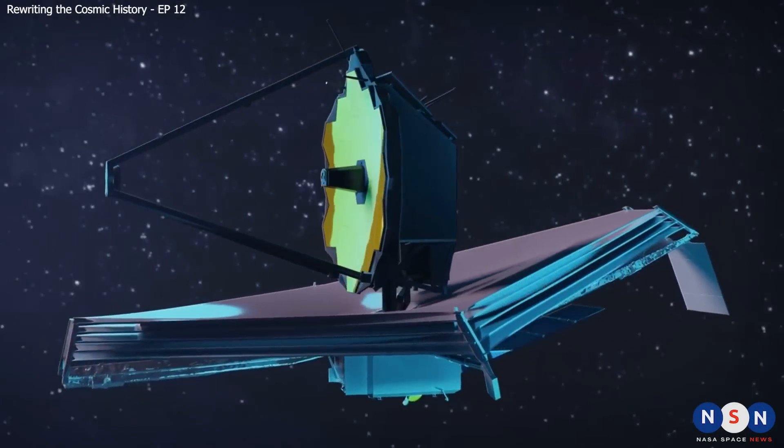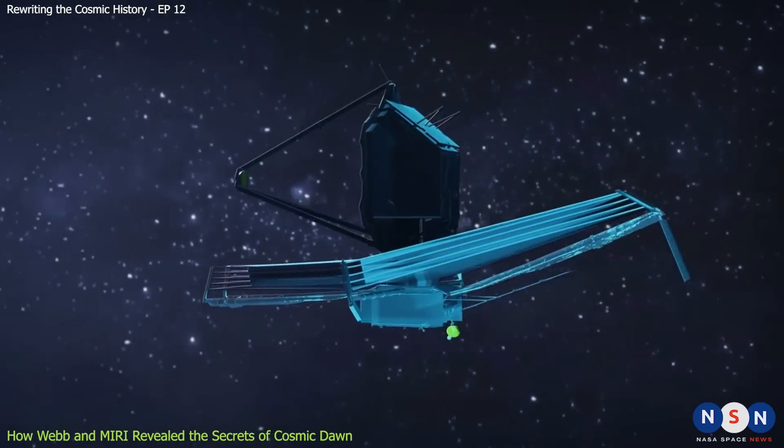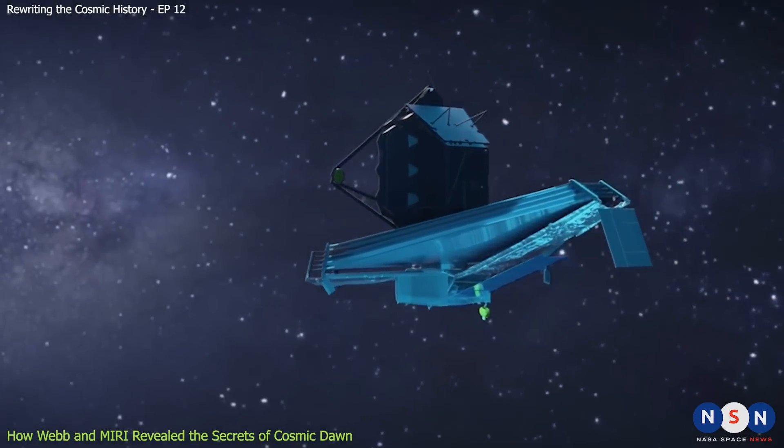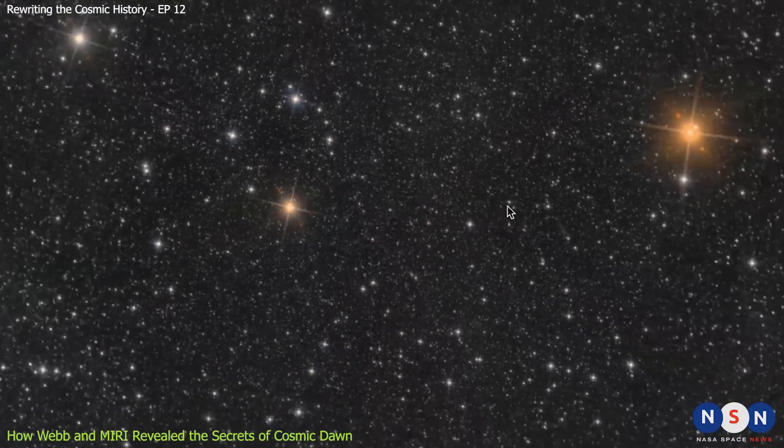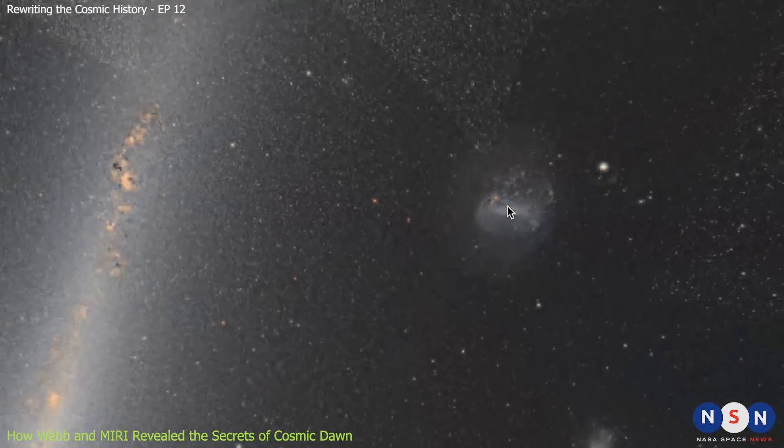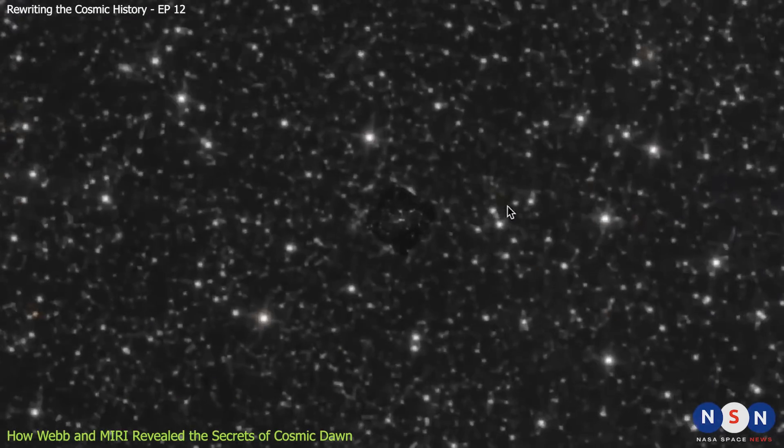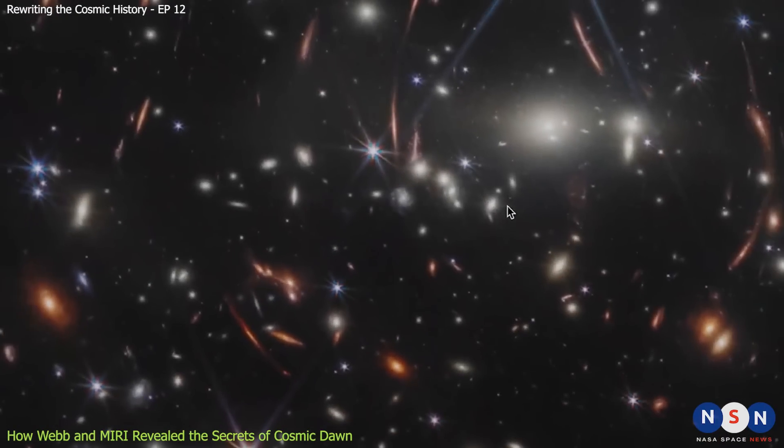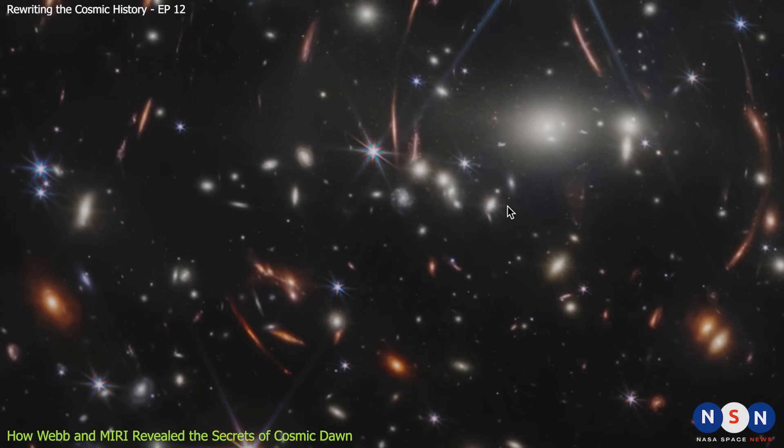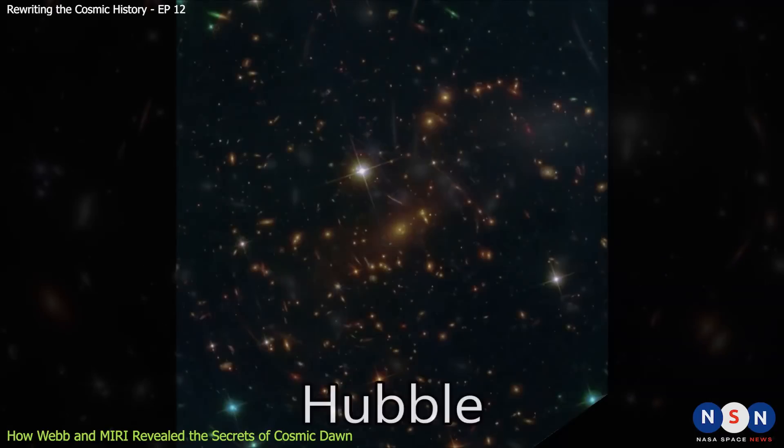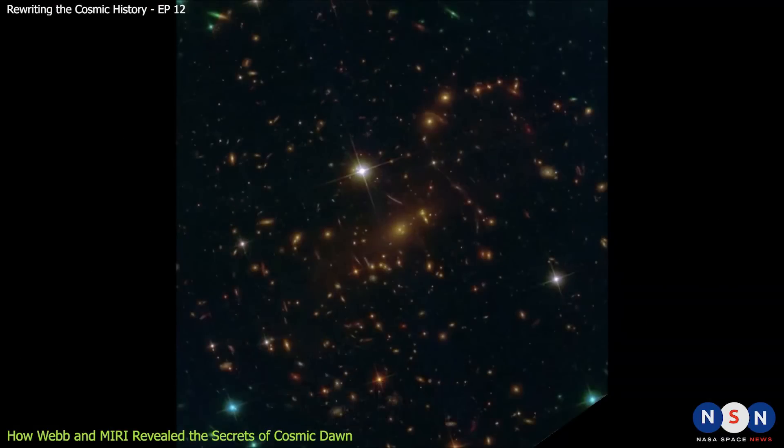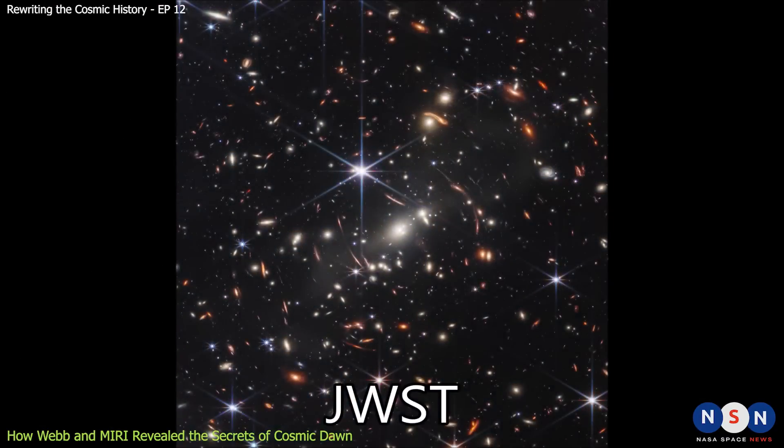One of Webb's main goals is to observe cosmic dawn and study the first stars and galaxies. To do so, Webb uses a technique called deep field imaging. This technique involves pointing the telescope at a small patch of sky for a long time, and collecting as much light as possible from faint and distant objects. This way, Webb can reveal galaxies that are otherwise invisible to other telescopes.